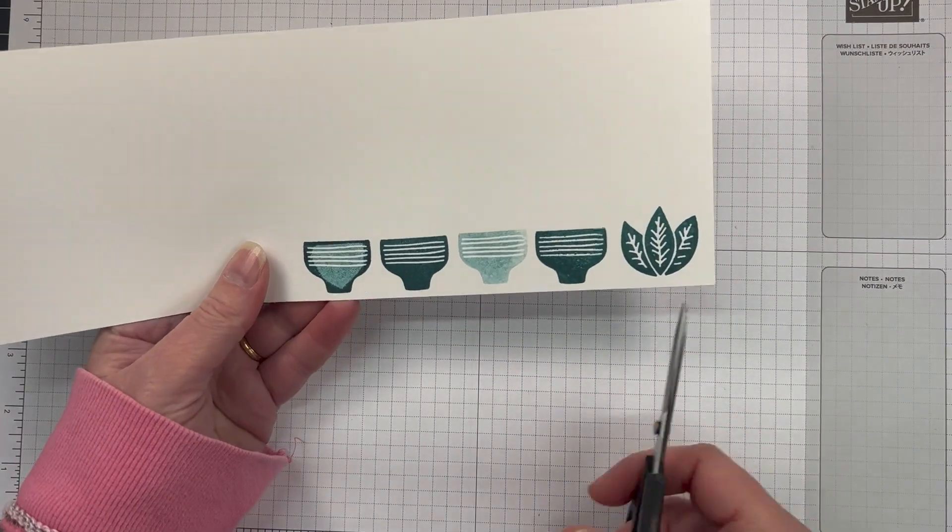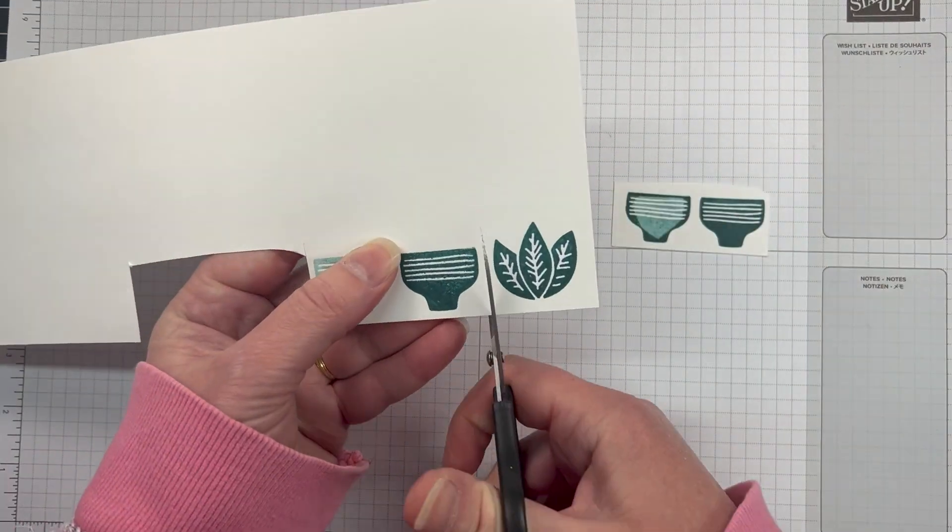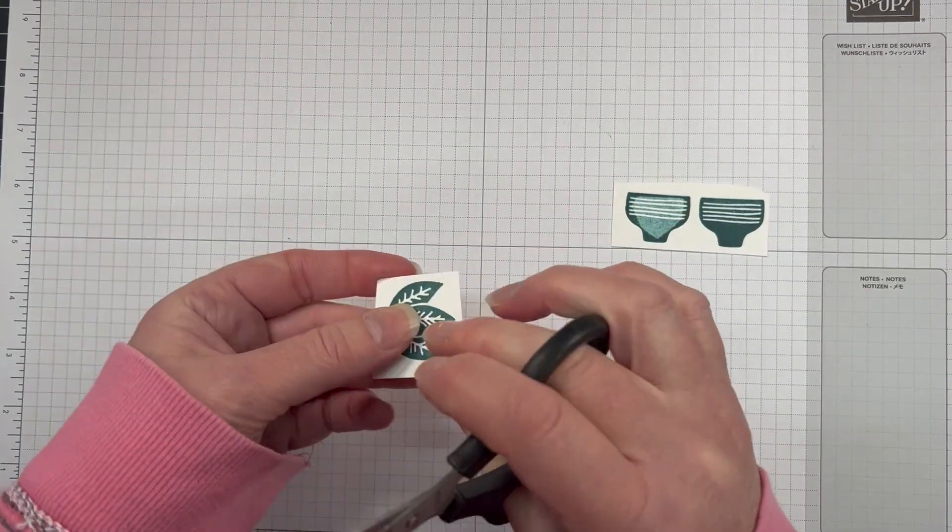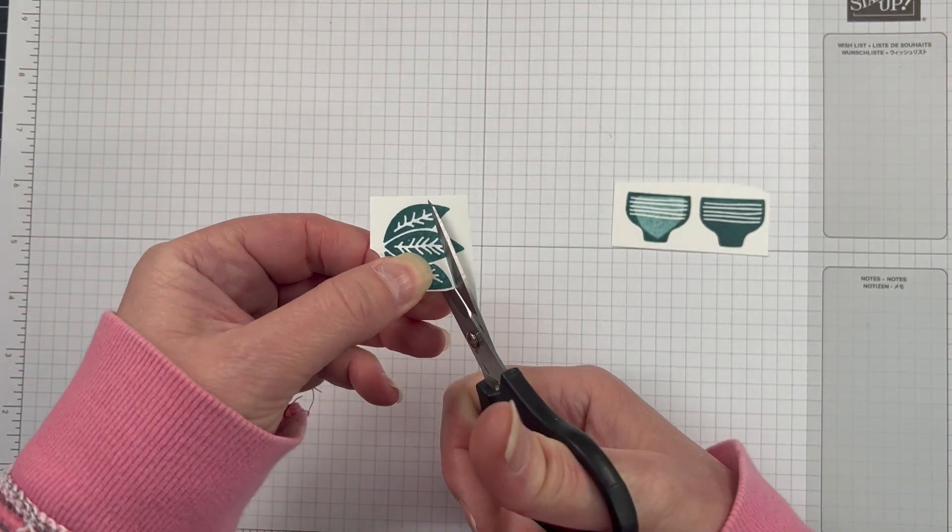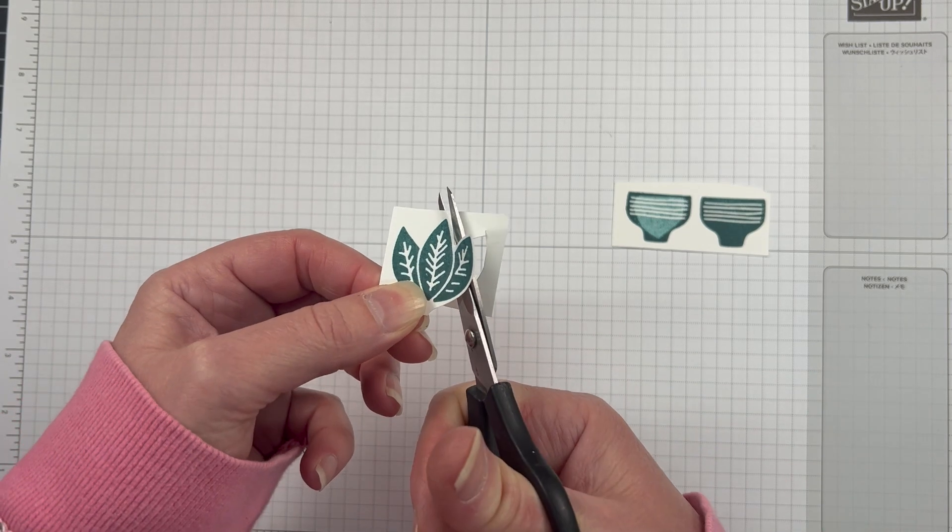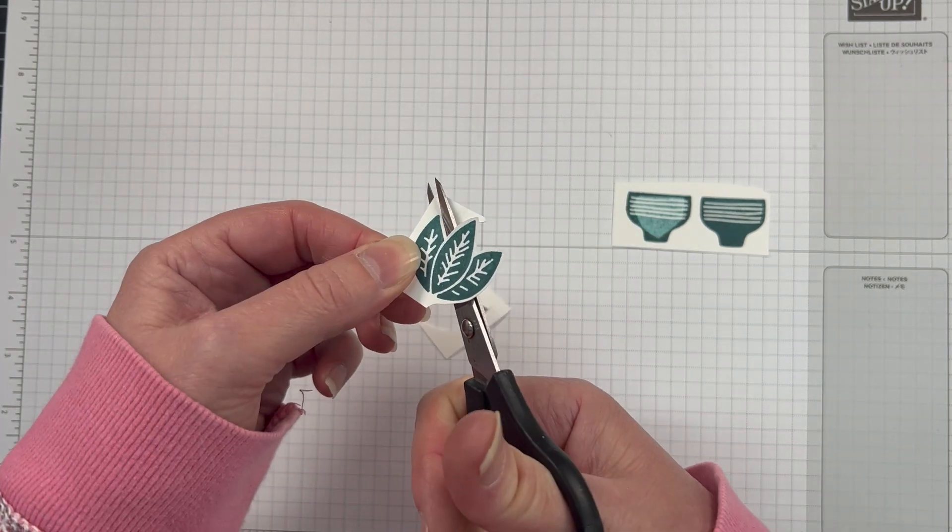So I've just stamped a couple of those pots. I have actually done second generation stamping, and then I've just sort of come in after I've done the second generation stamping and added a little bit of ink by using the rock and roll technique around the edges.